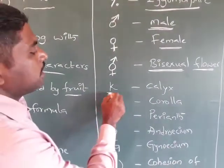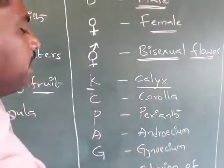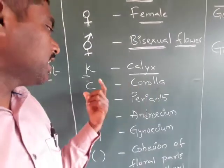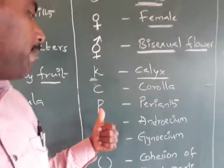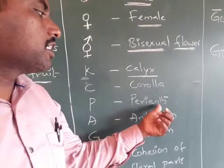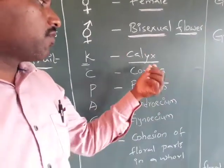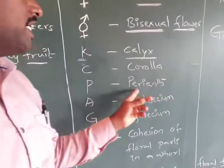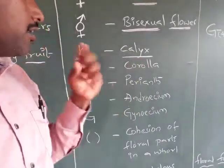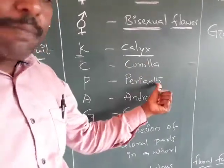K indicates the calyx, C indicates the corolla, and P indicates the perianth. Perianth is a composition of calyx and corolla arranged in a single layer — when calyx and corolla are composed in a single undifferentiated layer, that is called the perianth.